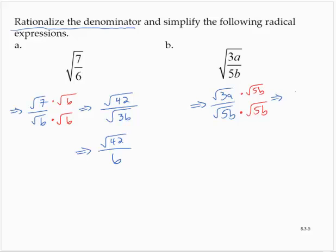That would give me equivalently the square root of 15ab over the square root of 25b squared. The square root of 15ab cannot be simplified any further. And the square root of 25b squared is 5b.